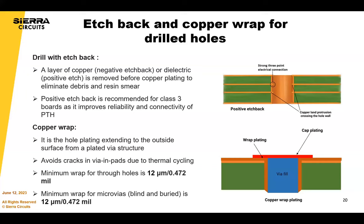Positive etch back is recommended for Class 3 boards — it gives a three-point connection to the inner layer of copper. In a Class 2 design, when cleaning vias prior to plating, you could get negative etch back, meaning the inner layer of copper doesn't protrude outside the dielectric and can get attacked during hole-wall cleaning. Some customers specify 'no negative etch back' or 'positive etch back required.' If your board is high-reliability Class 2, you can still specify positive etch back without incurring all Class 3 requirements, but it increases reliability.